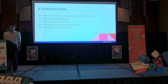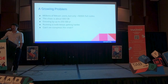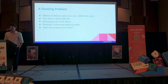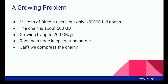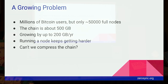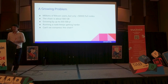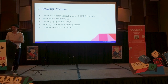We have a growing problem. Currently, we have millions of Bitcoin users, but maybe only 50,000 full nodes. And the chain is already about 500 gigabytes, growing by up to 300 gigabytes per year. So it keeps getting harder and harder to run a full node. And since that problem is growing, somehow the question arises: can we compress the chain?